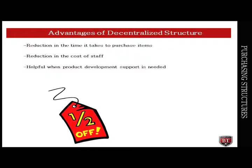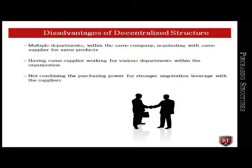This especially applies to engineering when product development is happening. Disadvantages are also present in the decentralized purchasing structure. One of the most prevalent and possibly most costly to the company is multiple departments within the same company negotiating with the same supplier for the same products. There are situations where departments can arrive at different prices for these products and different terms and conditions. Another disadvantage is having the same supplier working for various departments; if the supplier gets overextended and runs behind in shipping schedule, the departments are competing against each other for delivery on their order.